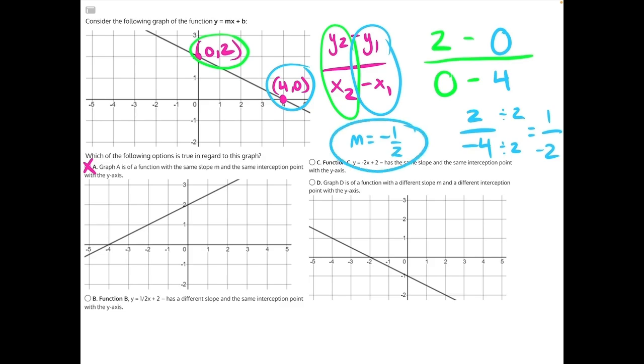If we compare that to answer choice B, negative 1 half is different from positive 1 half. So answer choice B is our correct answer. At that point, you can mark B and move on with the test. But for the sake of the video, I will show you why C and D are incorrect.